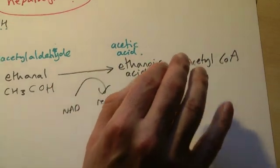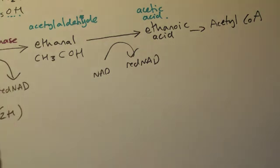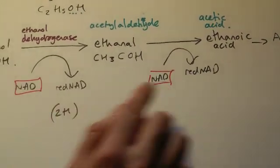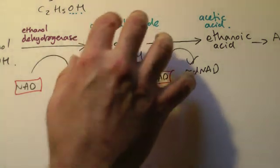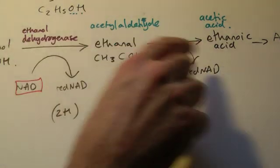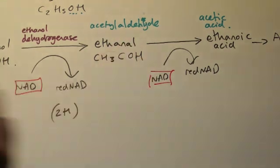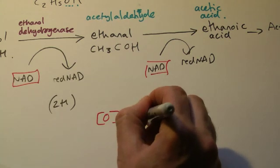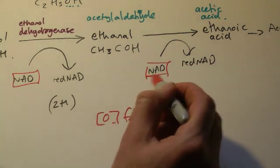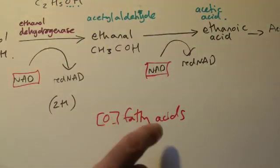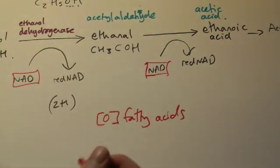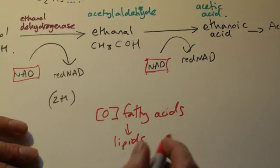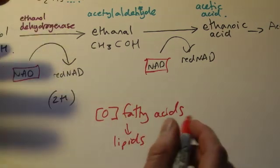One last point on this, all this NAD that's been used up, if you have lots and lots of alcohol in your system, of course you're going to need plenty of NAD to oxidise it, to accept the hydrogens in this detoxification process. However, NAD is also needed in oxidation of fatty acids, and the problem is, if all the NAD is going into this detoxification process, because there's so much alcohol in there, you no longer break down the fatty acids, and they get converted back into lipids, and the lipids are stored in the liver, inside these hepatocytes.